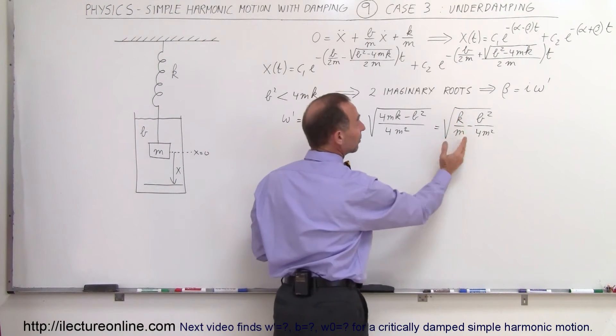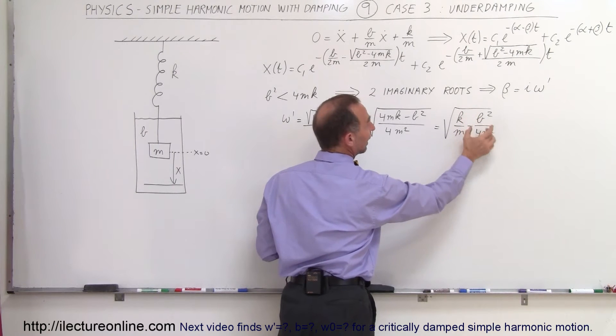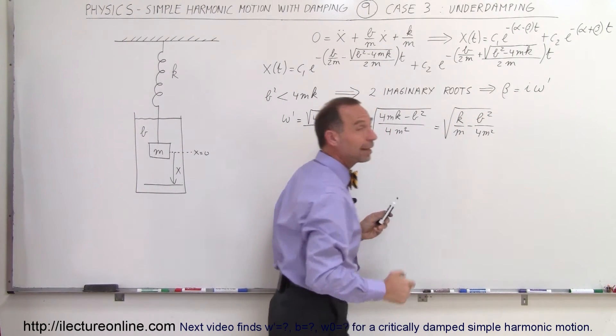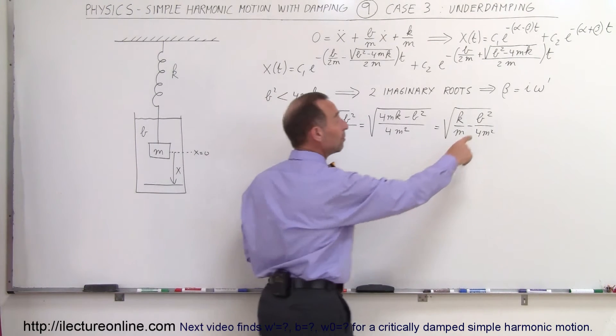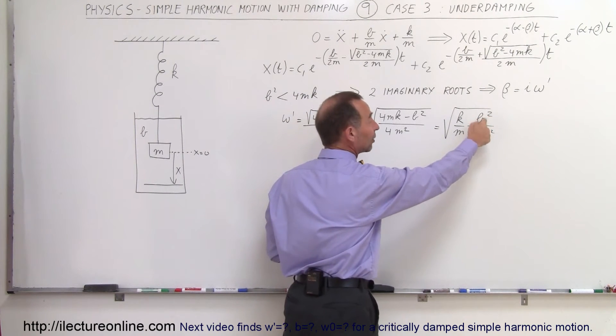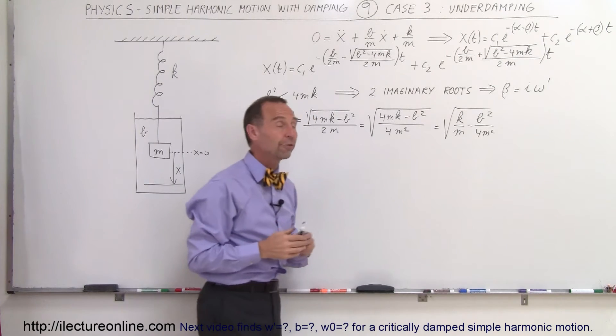Notice that the square root of k over m is the old frequency without damping, and that's going to be diminished now by some amount depending upon how big B squared is. The bigger B is, the damping factor is, the smaller the oscillatory frequency.